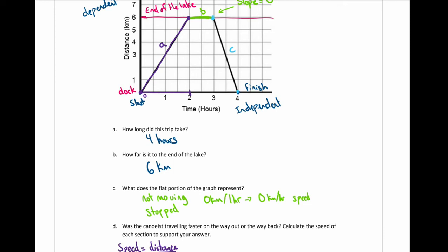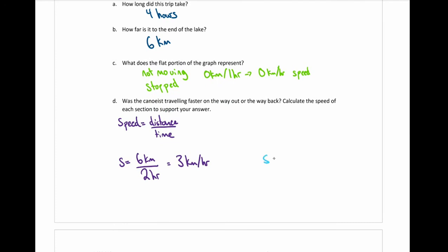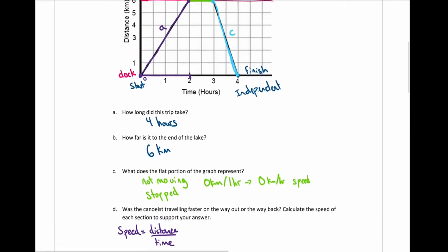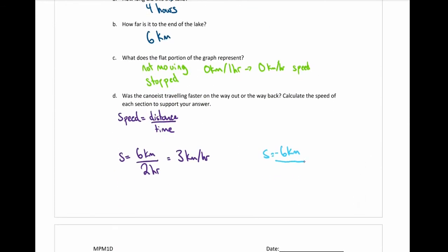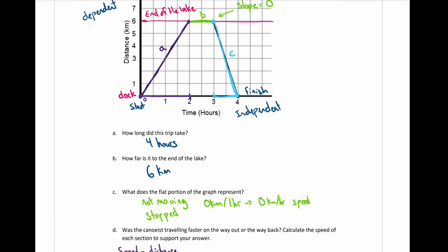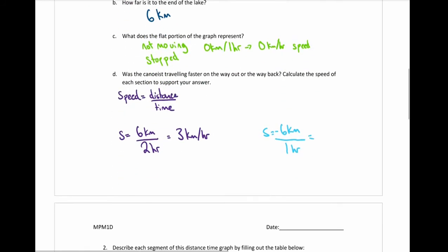For portion C, going from the peak back down, I'm finding the slope of this line. The distance goes from six back down to zero, so that's six kilometers. The time goes from three to four hours — that's only one hour. Be careful: don't assume it goes to four hours total; you're looking at just this portion, which is only from three to four, so that's one hour.